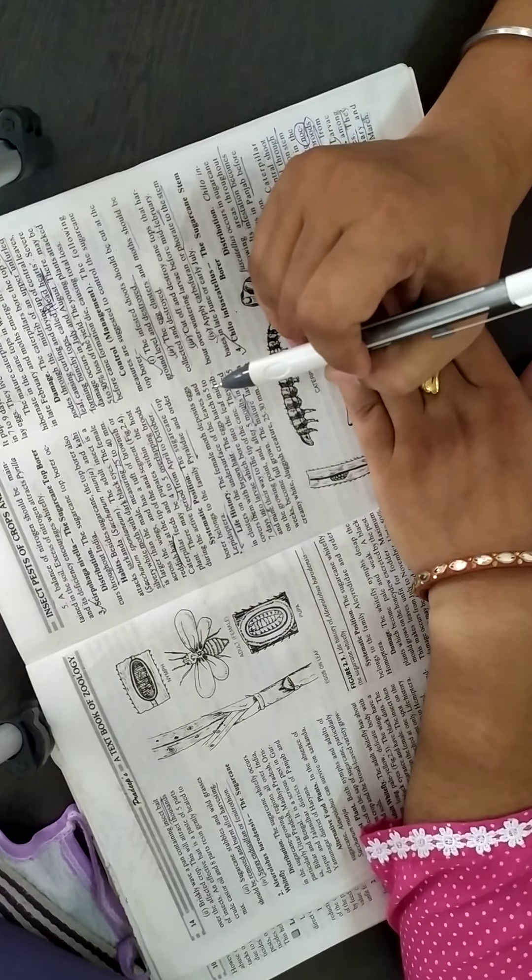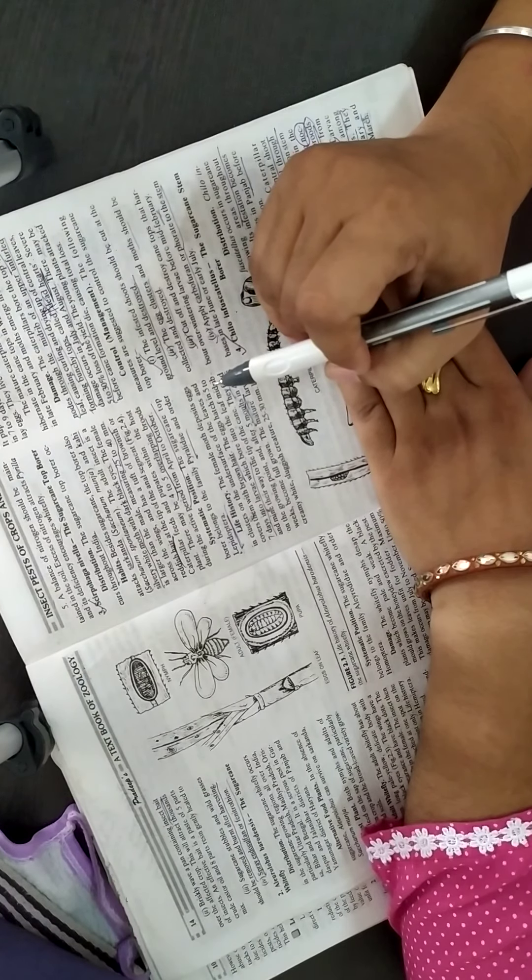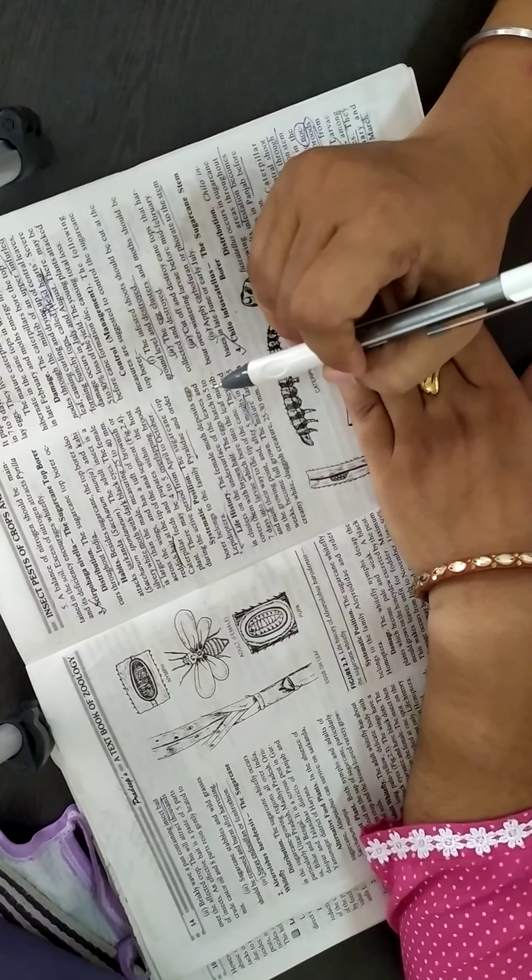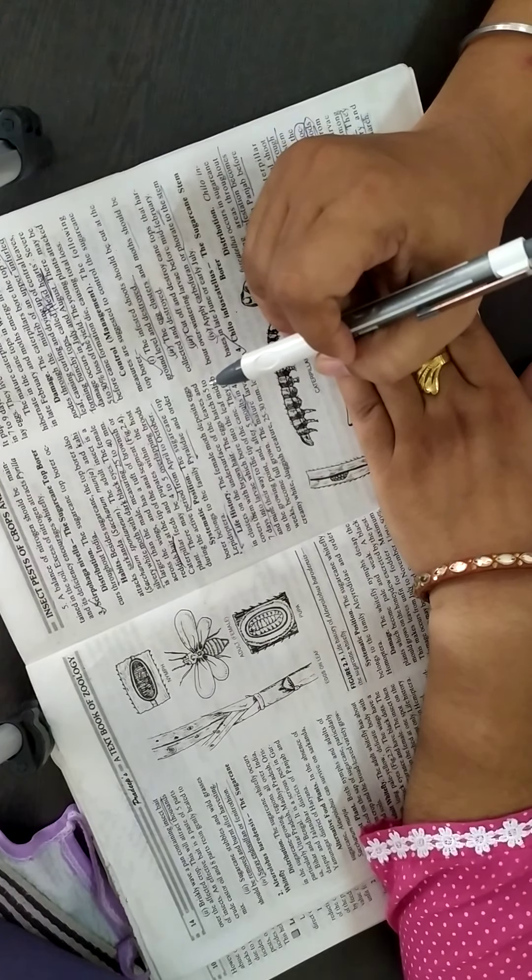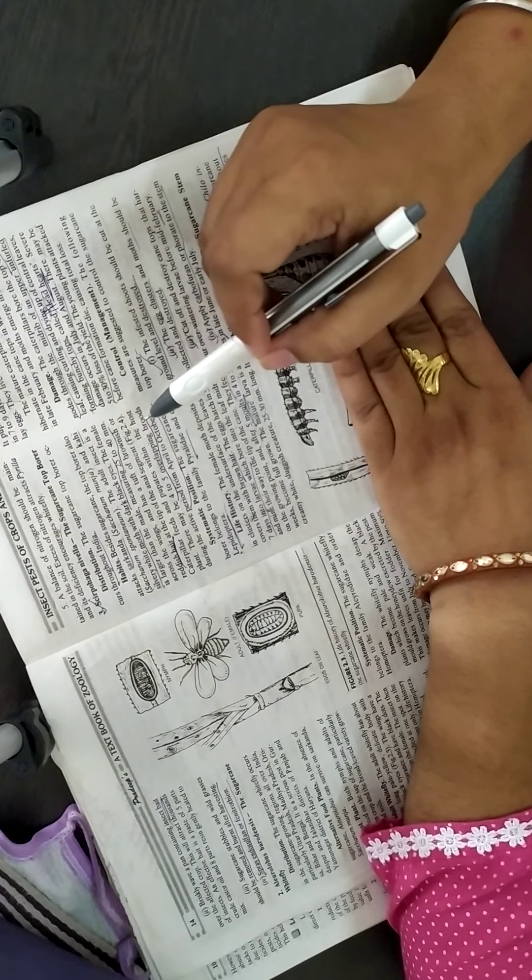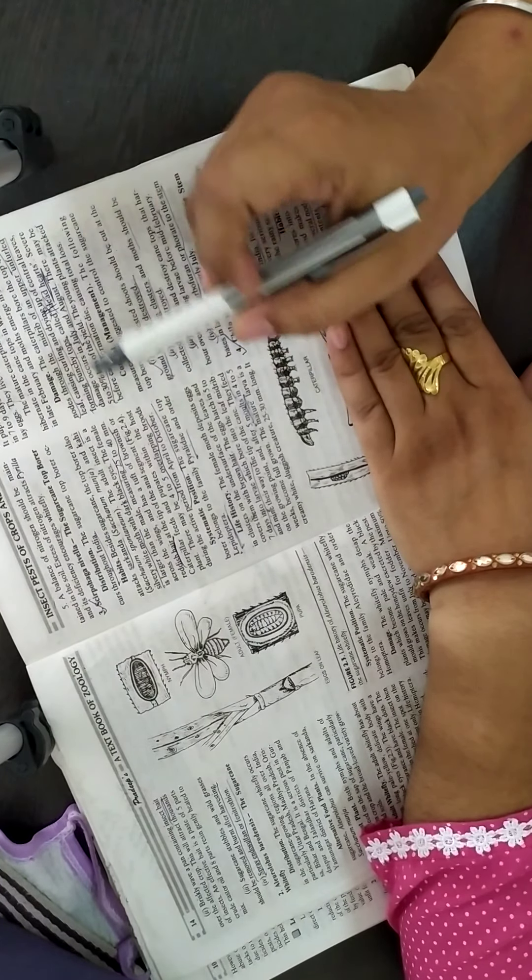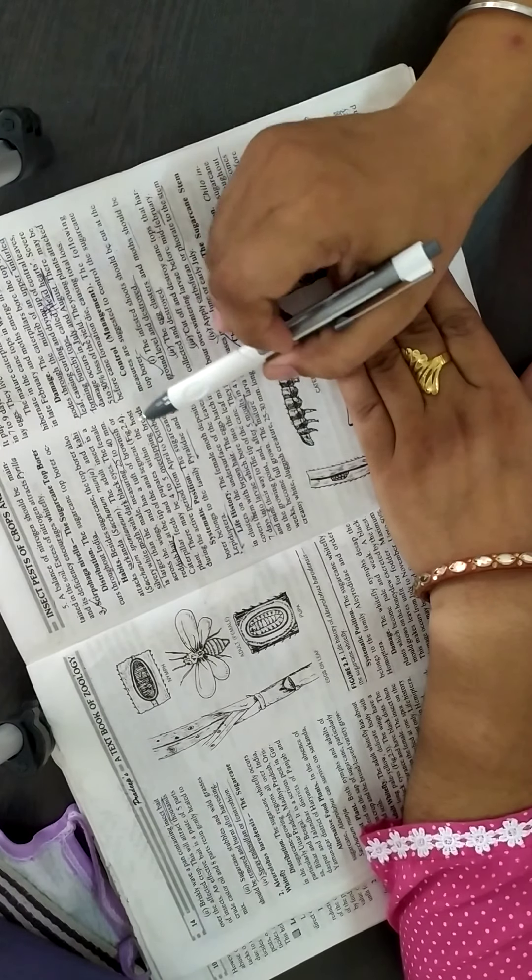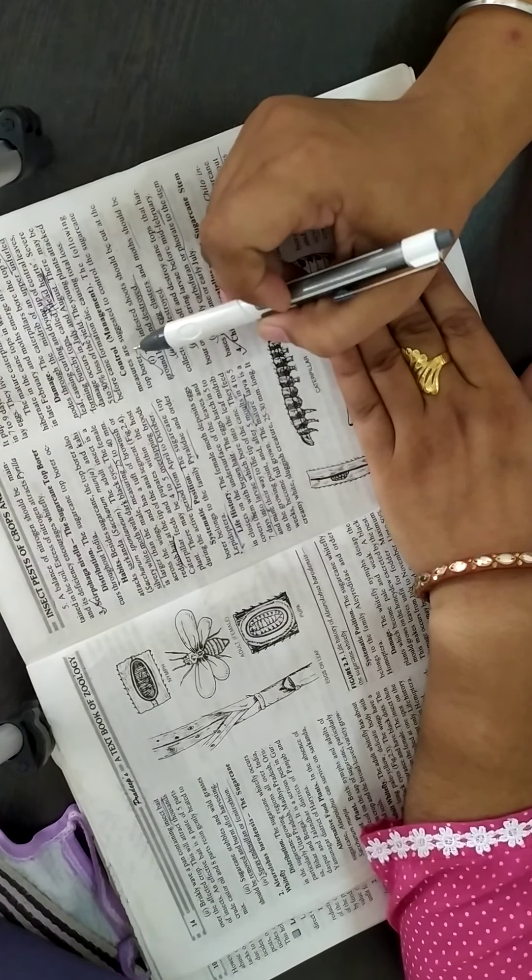Just because of the damage to the xylem and phloem tissue, the plant is unable to take nutrients and water from the soil and that ultimately leads to the death of the plant. Curling of the tops of the plant is called dead heart disease, which is caused by this pest. There is almost 5 to 30% loss of yield.